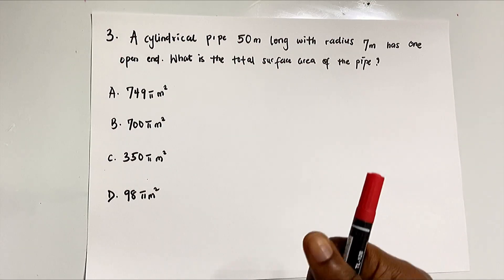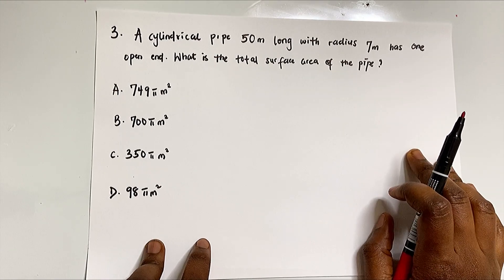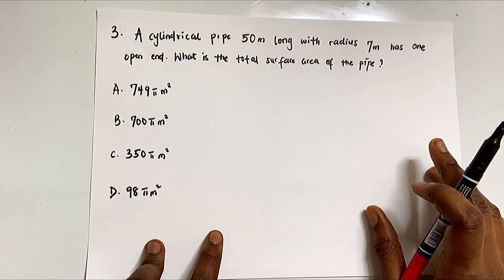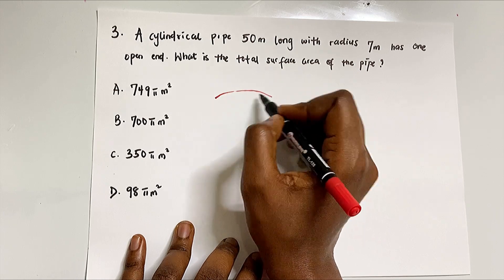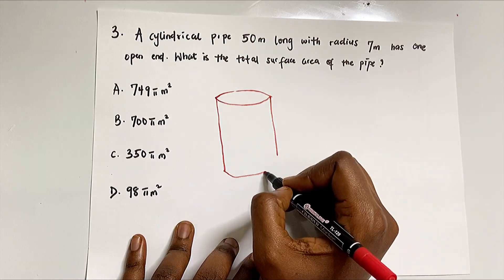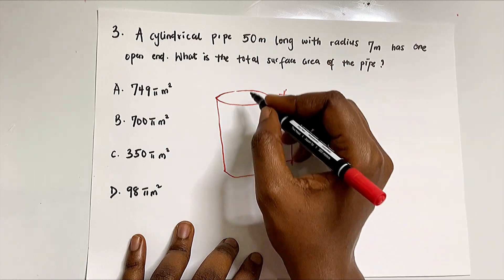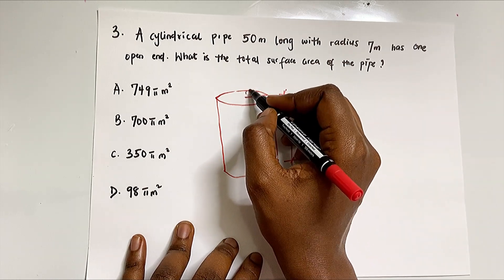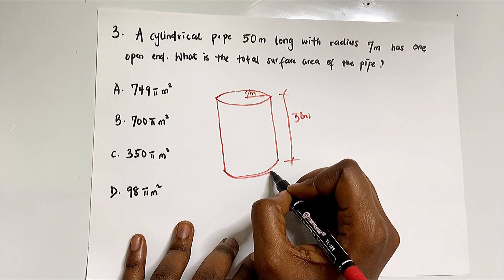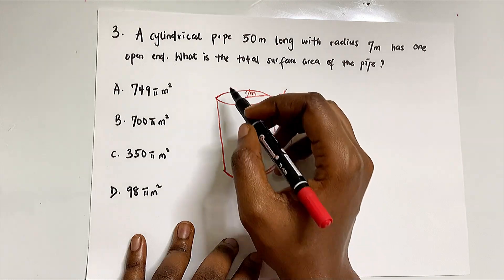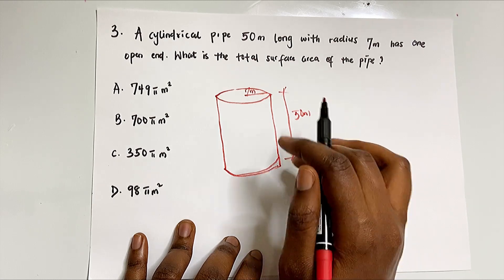Question three says: a cylindrical pipe 50 meters long with radius 7 meters has one open end. What is the total surface area of the pipe? This is a tricky question. Let's sketch it out — the pipe is 50 meters long with radius 7 meters. One end is closed and the other is open, which affects the formula.